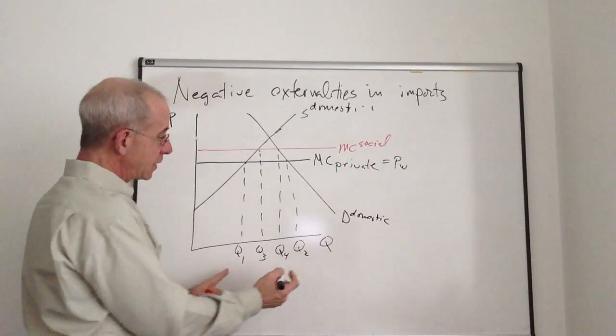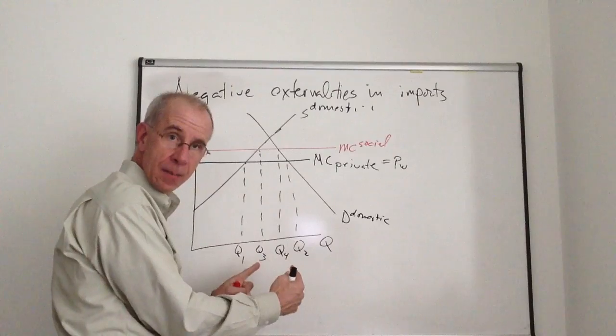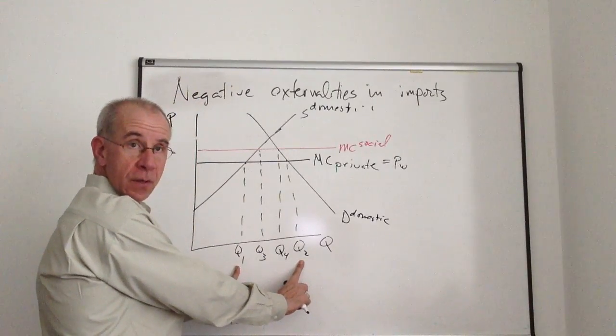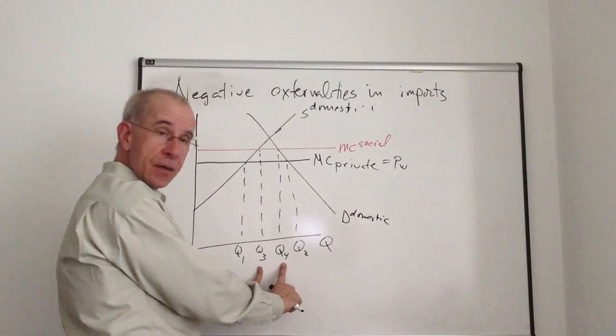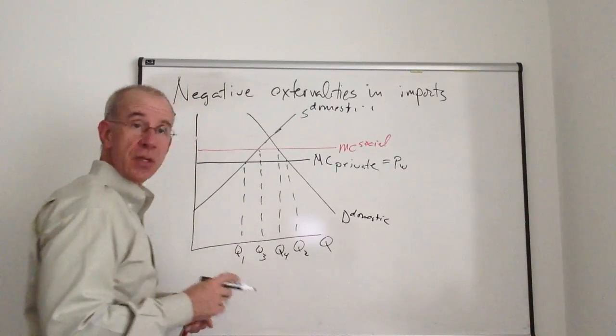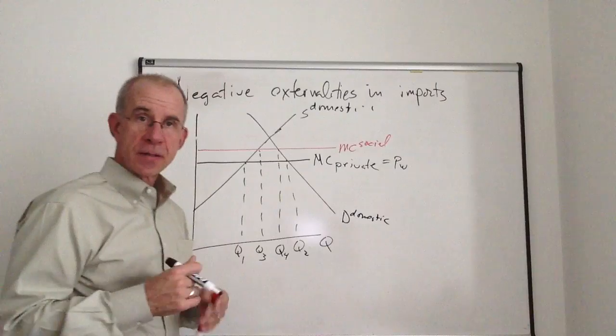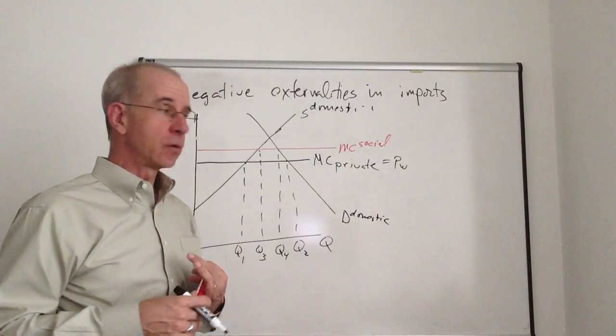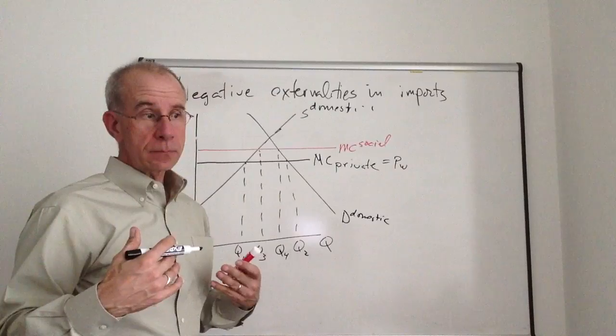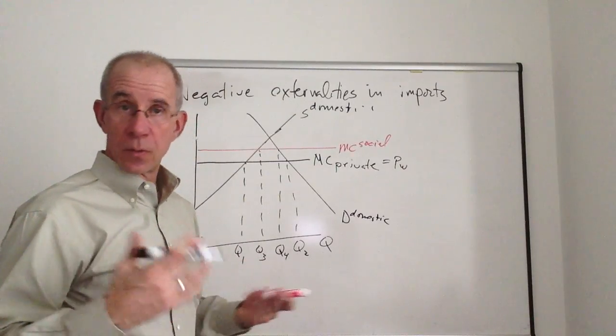So what you see is that there are too many imports coming in under free trade, where the imports are Q2 to Q1, compared to the social optimum, which is Q4 to Q3. So the first part of this analysis is to identify the inefficiencies associated with free trade.